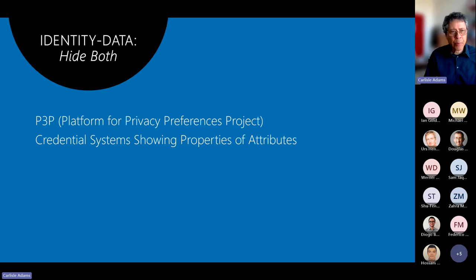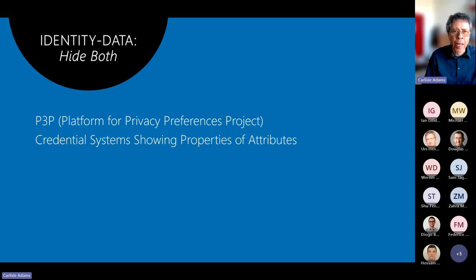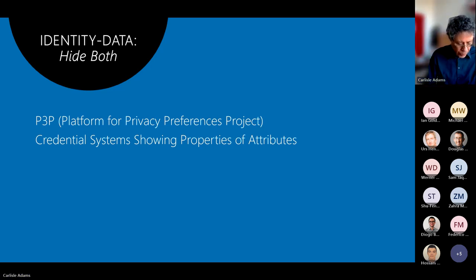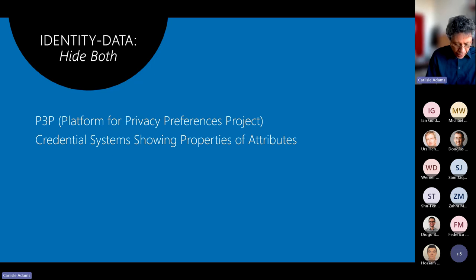Credential systems show up again in this final category, but this time showing properties of attributes. When I talked about credential systems before, identity could be treated as just another attribute that Alice could choose to reveal or not. But we can also hide the data about Alice — the attributes themselves — by showing only properties of attributes. For example, Alice could prove that her age was within a particular range without actually saying what her age was, or prove that she was European without saying which country she was a citizen of. In this scheme, you can do arbitrarily complex Boolean functions of the user's attributes using connectives like AND, OR, NOT, and range properties — a very powerful technique.